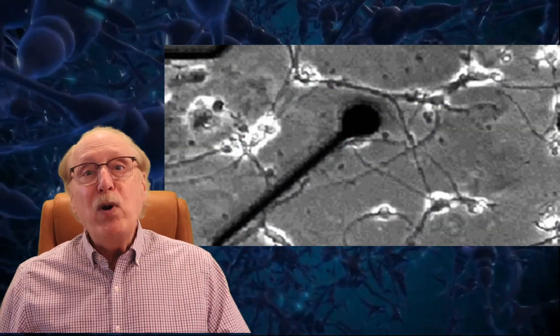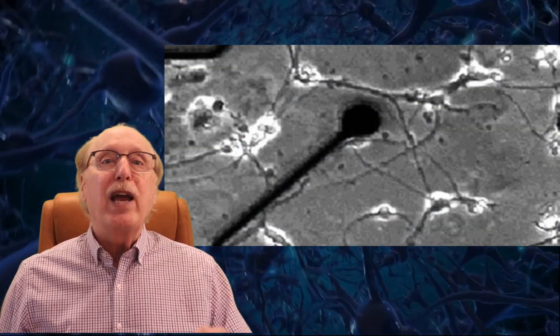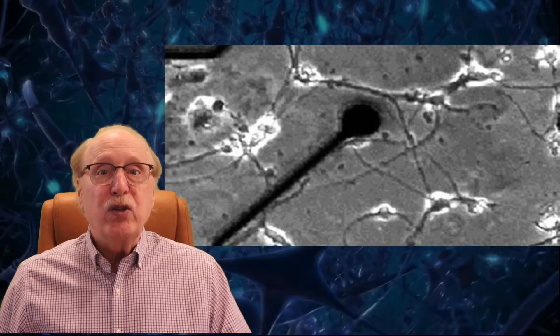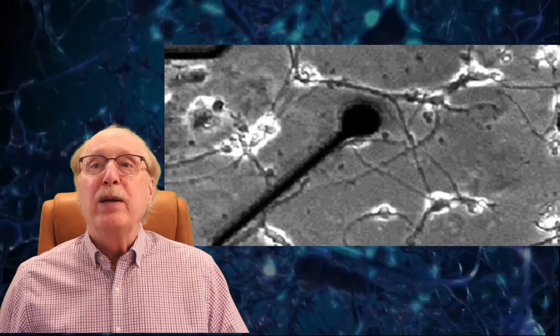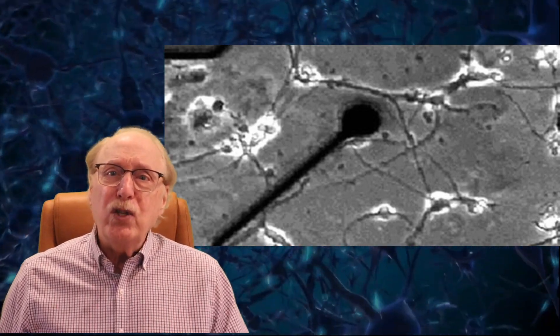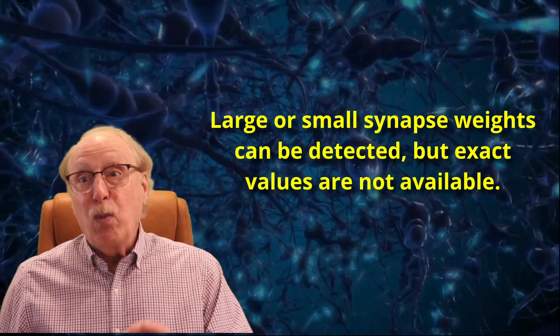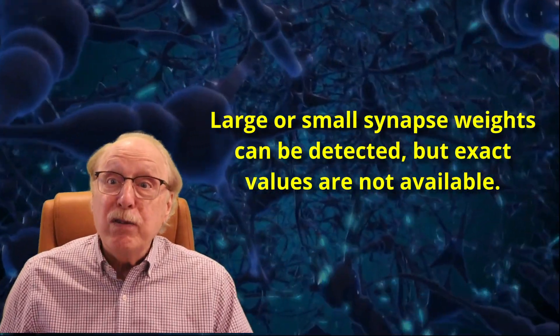In the lab, we can place an electrode on a neuron and measure precisely how an incoming spike changes the membrane potential and deduce the precise synapse weight. But your brain has no such technique available. Summary? Neurons can learn generally whether a synapse has a large or a small weight, but never its specific value.